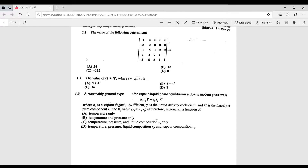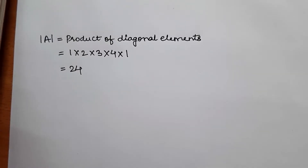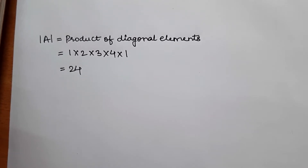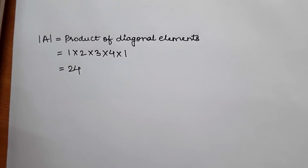First question: find the value of the given determinant. The determinant for this particular matrix is the product of its diagonal elements, which is 24. One thing to keep in mind is that for an upper triangular matrix and a lower triangular matrix, the determinant is the product of its diagonal elements.